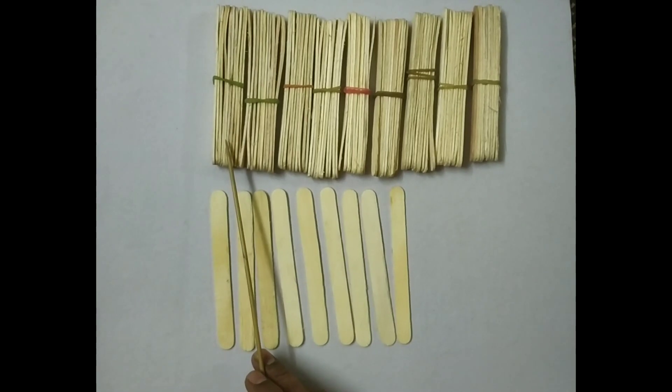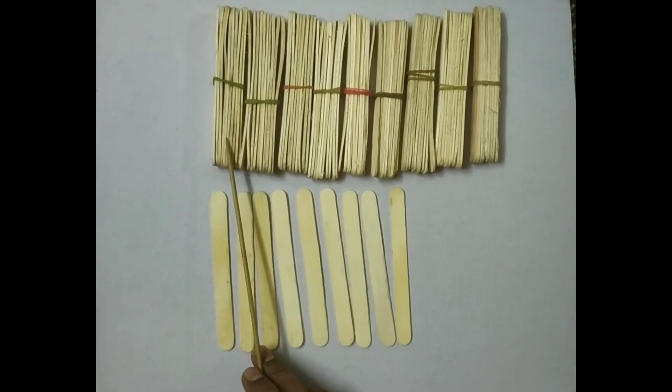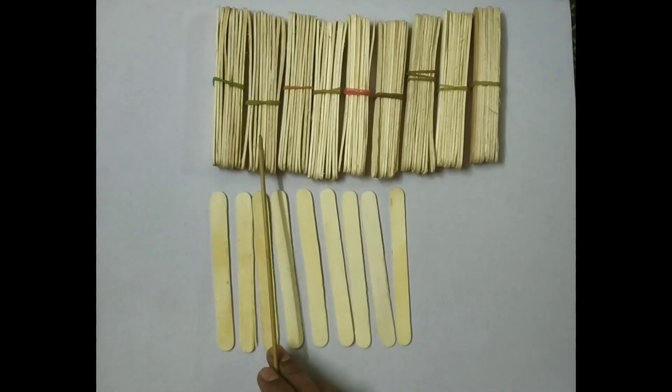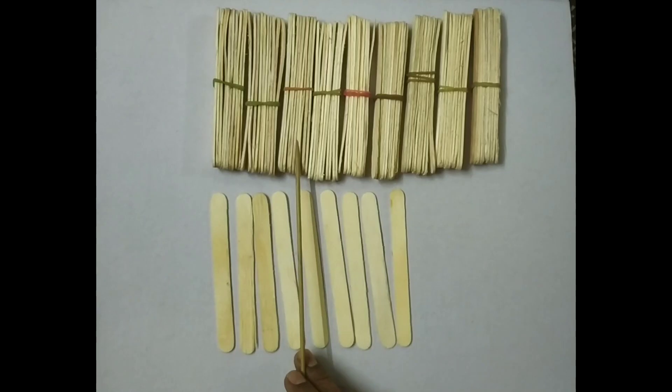In one bundle, we have 10 ice cream sticks. So we have 10, 2 tens 20, 3 tens 30.